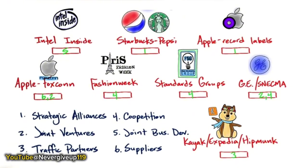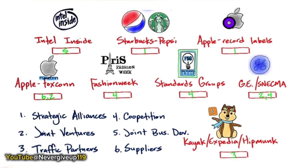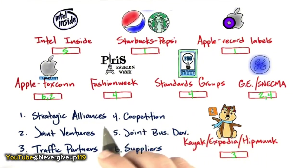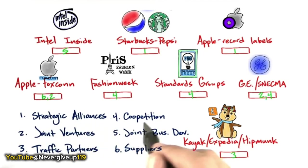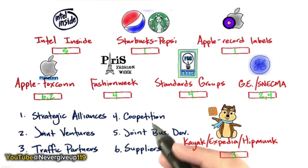These were good examples to help understand the different types of relationships. Sometimes they blur between each other — it might start with co-opetition, turn into a strategic alliance, and someday might actually be a joint venture. But the whole idea is that you're working together with others to help build your company.